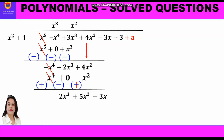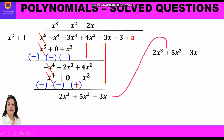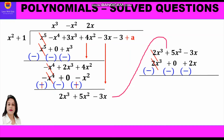Division: divide 2x³ by x² to get 2x. Multiplication: 2x × x² = 2x³, and 2x × 1 = 2x, written below like terms (2x³ below 2x³, and 2x below -3x). Subtraction: change signs. 2x³ and -2x³ cancel; 5x² - 0 = 5x²; -3x - 2x = -5x. Bring down -3.